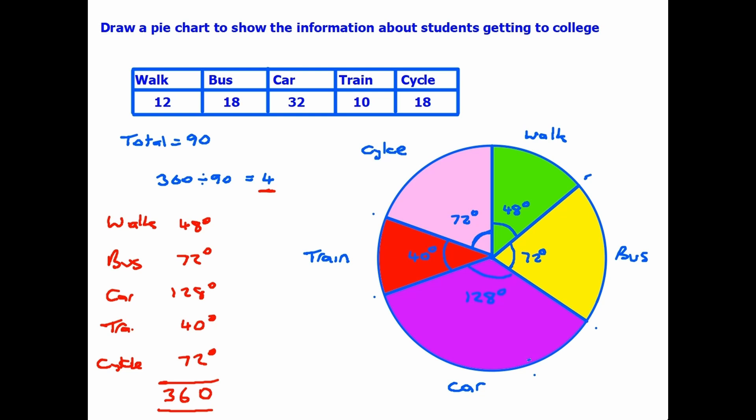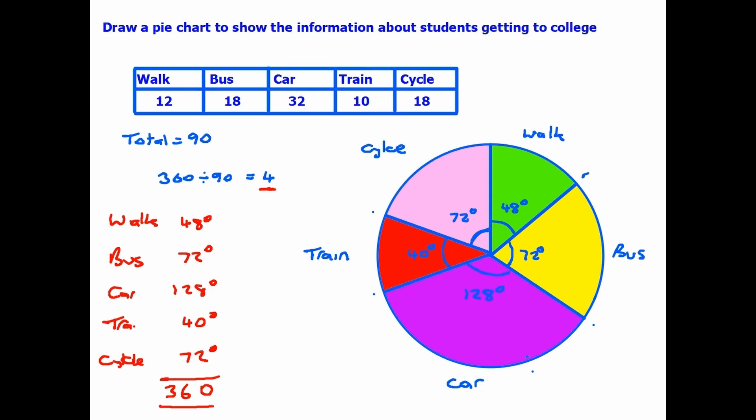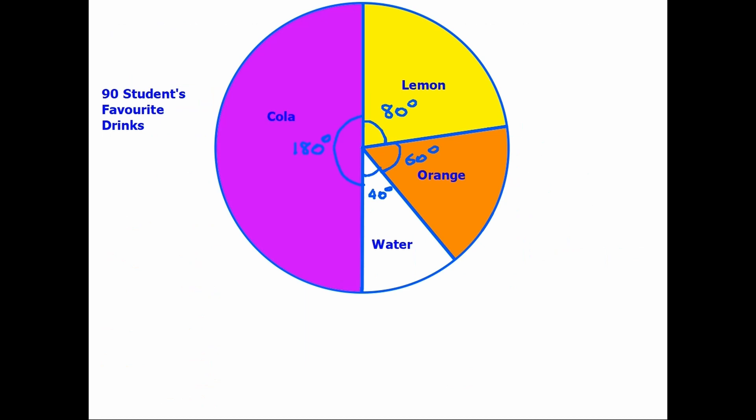Now there is a third situation that can occur where you are shown a pie chart and asked to find numbers. Let's have a look at that situation. So here's our new pie chart, and this time we are looking at students' favorite drinks. Again, a quick glance tells us that cola is well, half the students' choice. It's by far the more popular, followed by lemon drinks, orange, and the least popular is water.